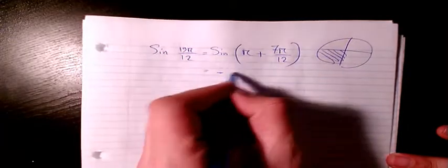Sine 19 pi over 12 will be equal to sine pi plus 7 pi over 12. Because it's going to be in the third quadrant, it's going to be equal to negative sine 7 pi over 12.